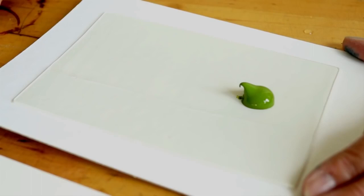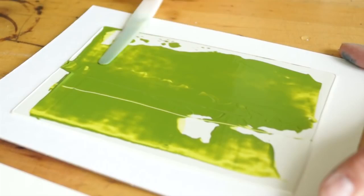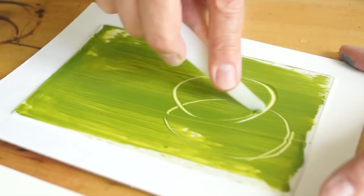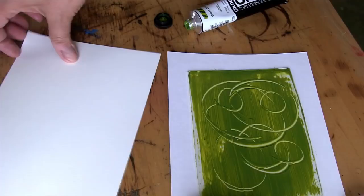Squeeze a dab of open acrylics onto the dried molding paste and then evenly spread it out. Using any tool you prefer create a drawing using a subtractive technique. Then take a piece of paper and firmly press it into the molding paste and burnish the back. Peel the paper up to see your print.